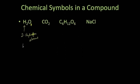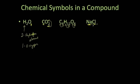H2O is two hydrogen and one oxygen. CO2 is one carbon and two oxygen atoms — the subscript indicating the element that it follows. Glucose is C6H12O6: six carbon atoms, 12 hydrogen atoms, and six oxygen atoms. Sodium chloride has one sodium atom and one chlorine atom, and they don't have subscripts because the symbol alone tells you there's at least one atom there.